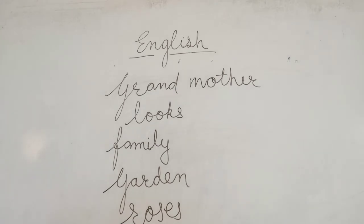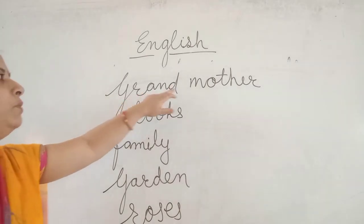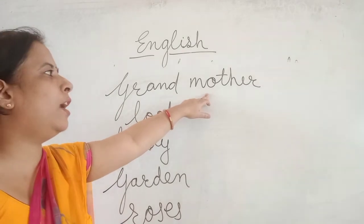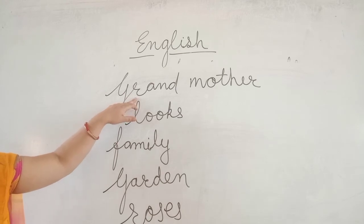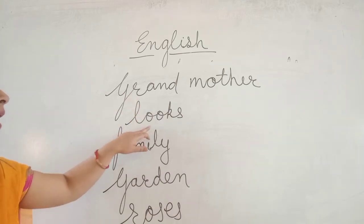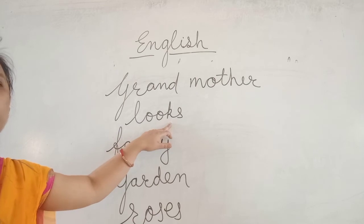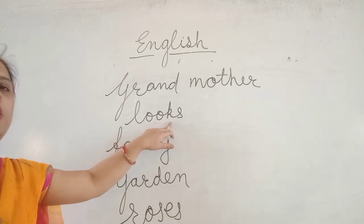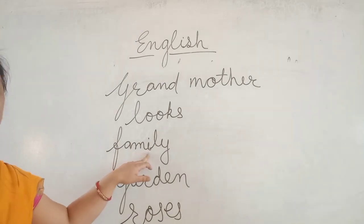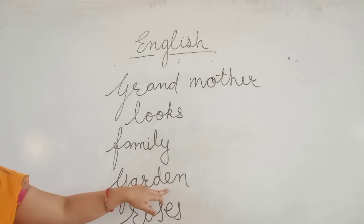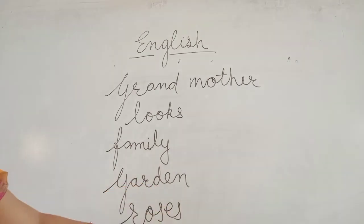Okay. I will repeat the words. Sorry. Grandmother: G-R-A-N-D M-O-T-H-E-R, grandmother. Looks: L-O-O-K-S, looks. Love. Looks, roses, family, garden, roses. Lilies: L-I-L-I-E-S, lilies.